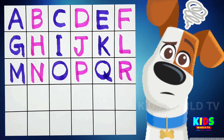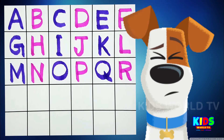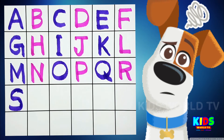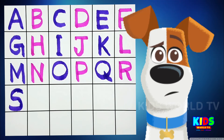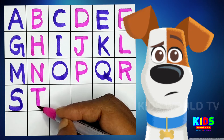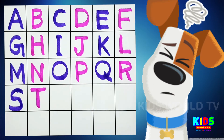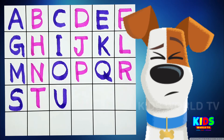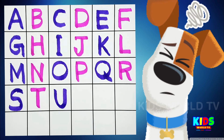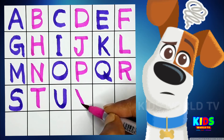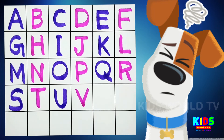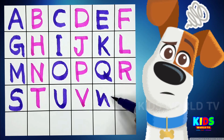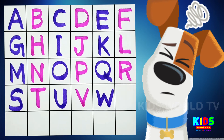R for Rabbit, S for Ship, T for Turtle, U for Unicorn, V for Van, W for Whale.